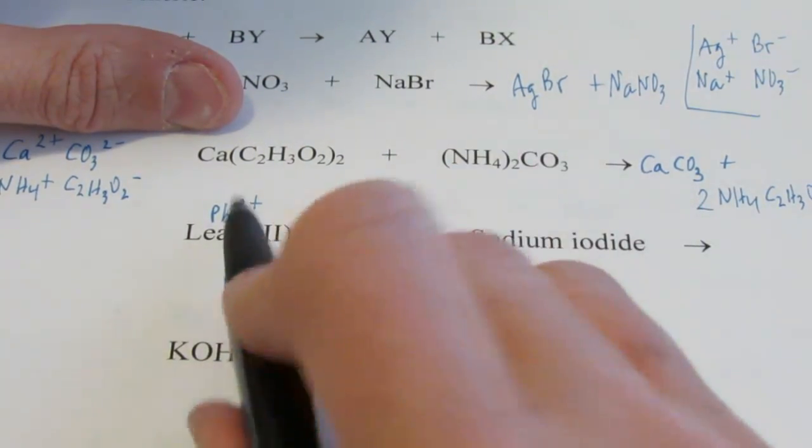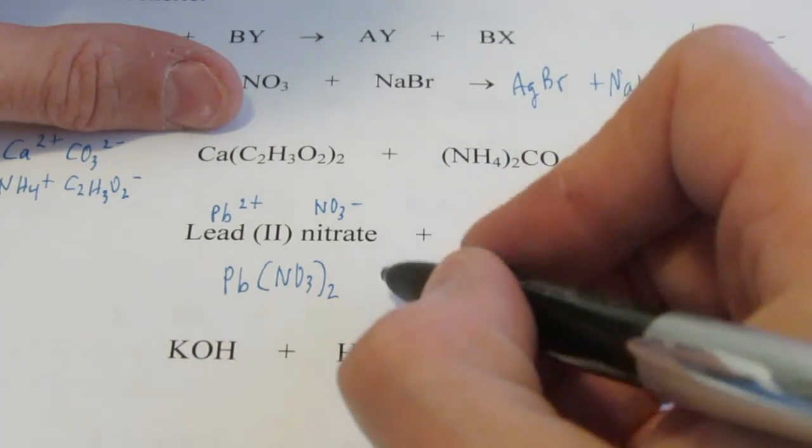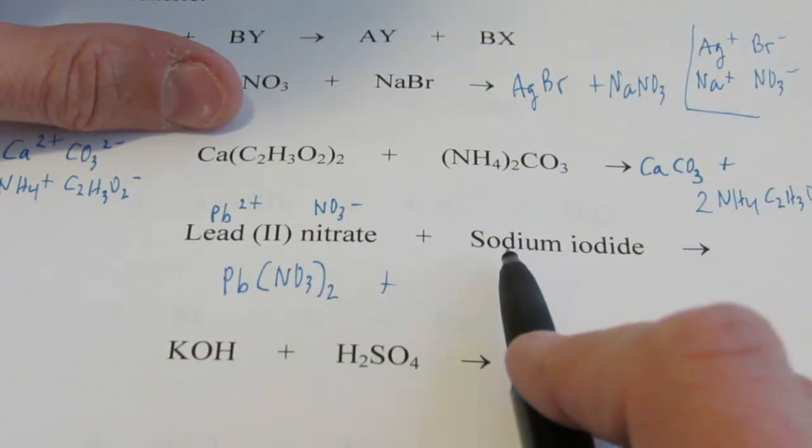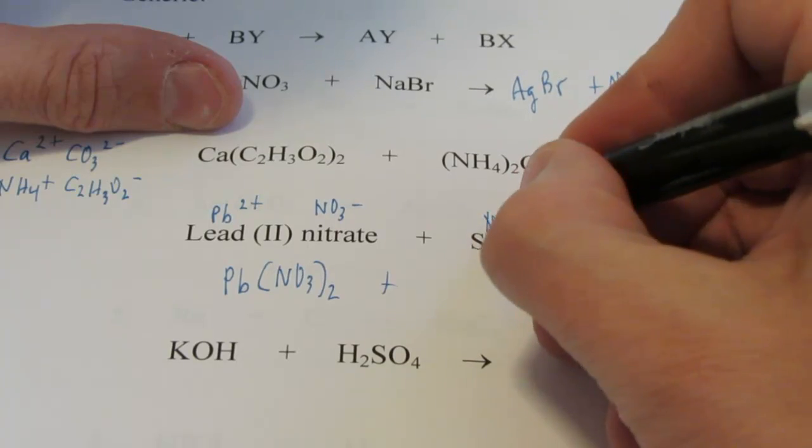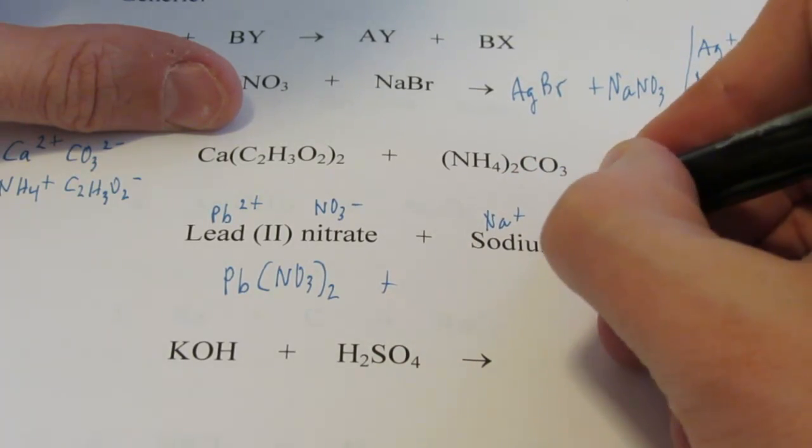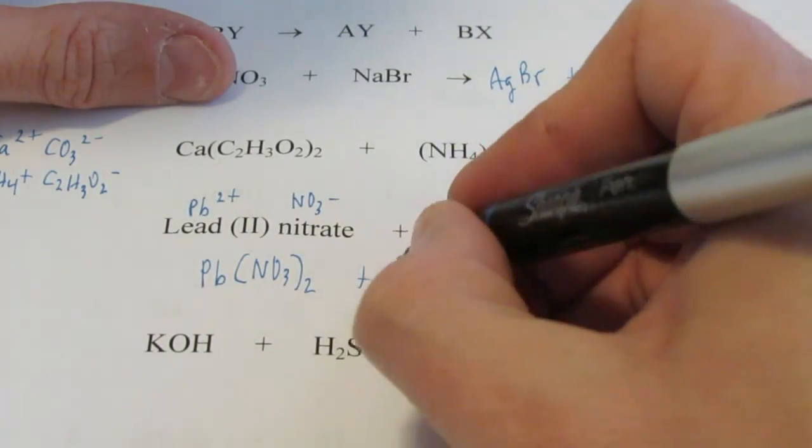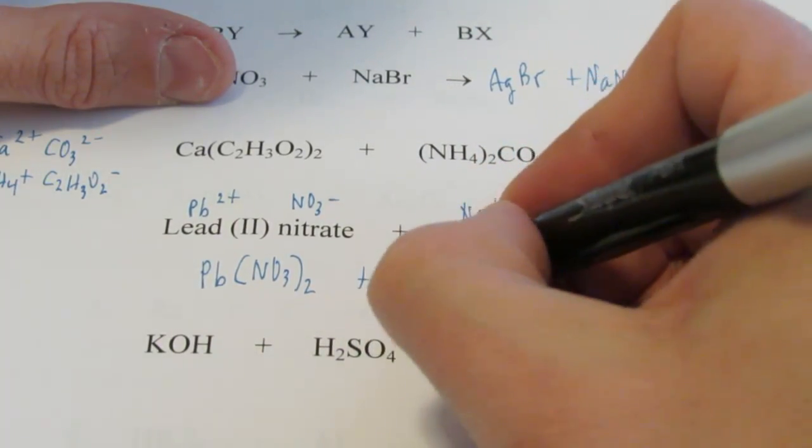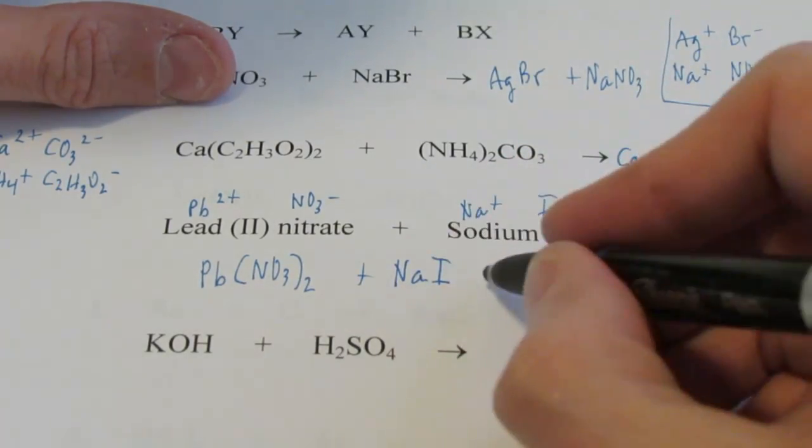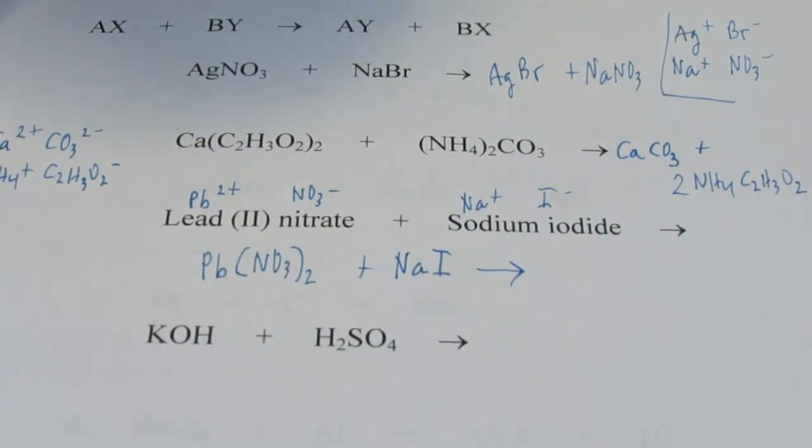Now that's going to react with sodium iodide. Sodium, positive 1. Iodide, negative 1. Group 17, remember, it's a halogen. So we have sodium iodide, NaI, one of each. Double replacement.